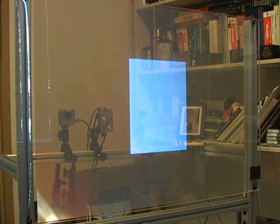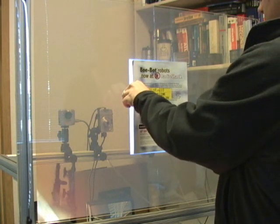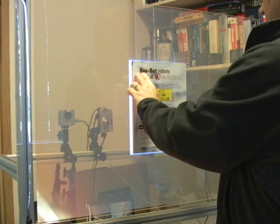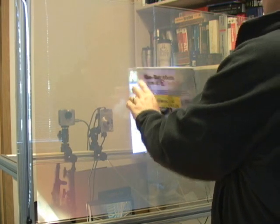We have begun exploring capabilities that are unique to Touchlight. For example, due to the transparent nature of the display, we can capture a high resolution picture of an object placed on the surface using the digital still camera behind the display. The shutter is released programmatically.